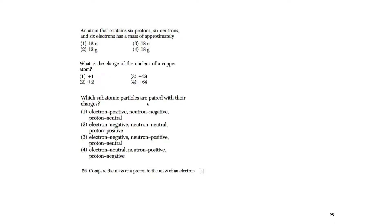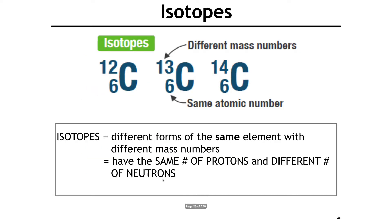Which subatomic particles are paired with their correct charge? We know those. Compare the mass of a proton to the mass of an electron — the mass of a proton is higher than the mass of an electron.